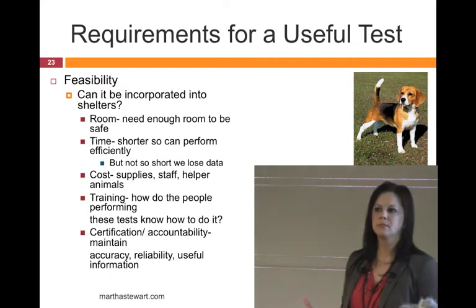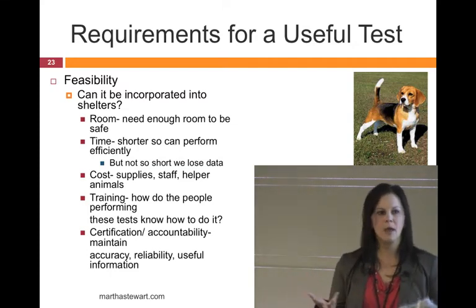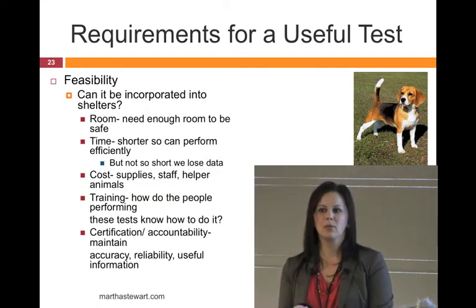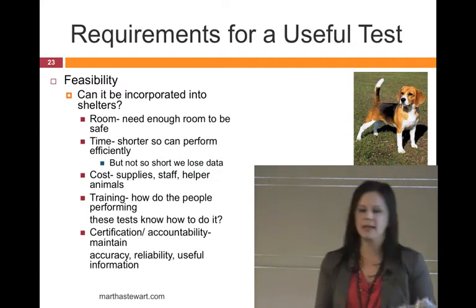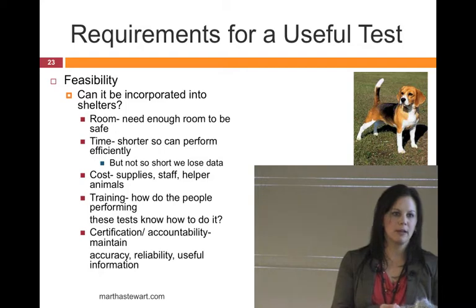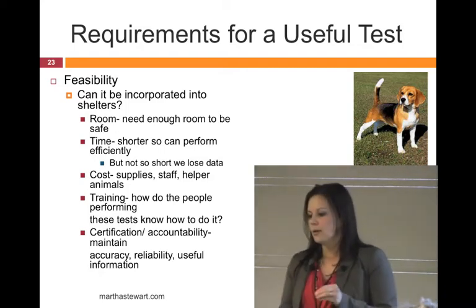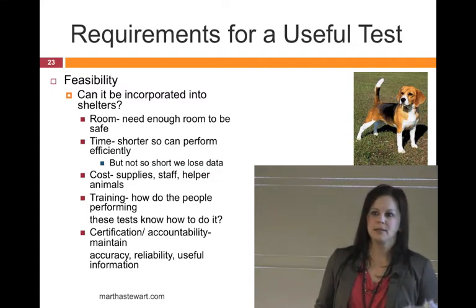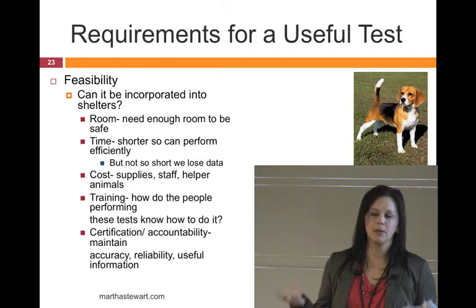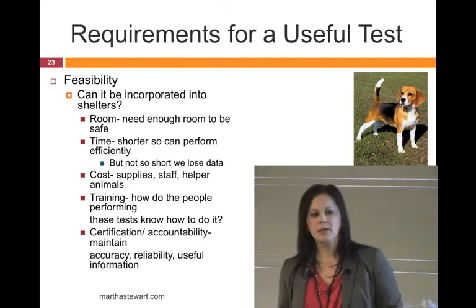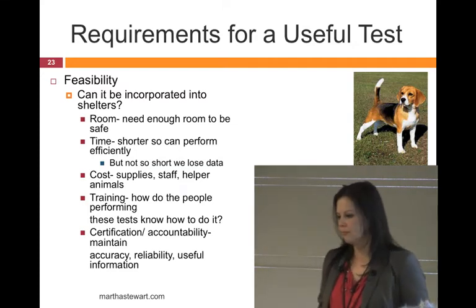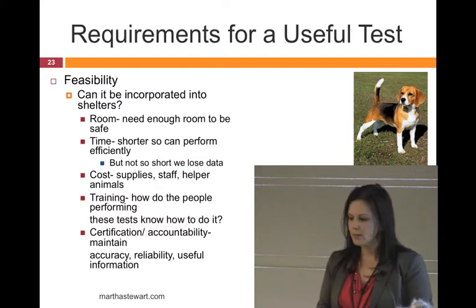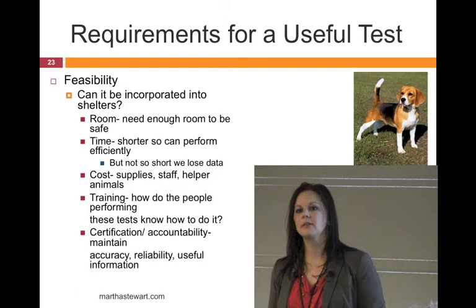The scoring system must be clear, straightforward, and objective — describing behaviors rather than interpretations. Telling me the dog was 'happy or mad' doesn't help much, but telling me his ears were back, tail was tucked, and he was showing all his teeth tells me a lot. We don't want forms so simple we lose information, but not so complicated they take forever to fill out. And then feasibility: we can have the perfect test, but if we can't implement it in a shelter — considering space, time, cost of supplies, training of staff, and certification programs — it's useless.